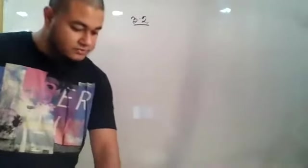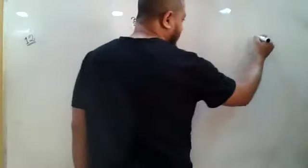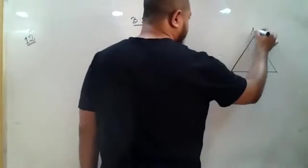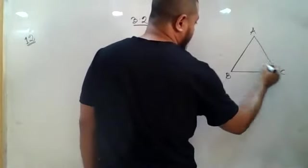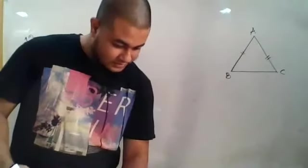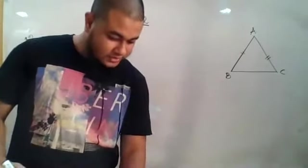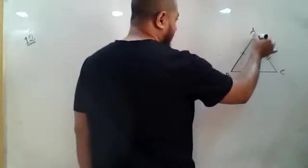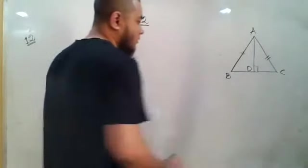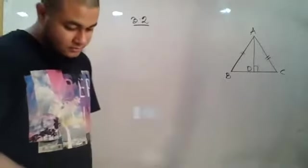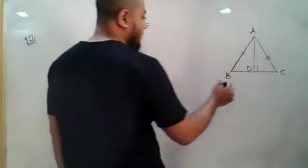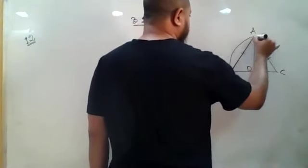In the isosceles triangle ABC, the two equal sides are AB and AC. AD is the perpendicular from vertex A to the base BC. We are given the circumradius of the triangle.